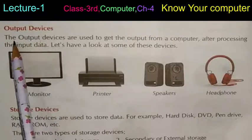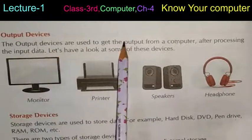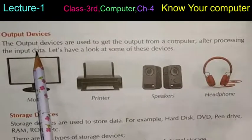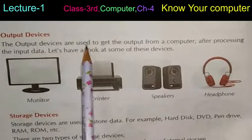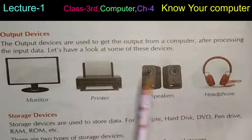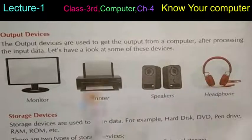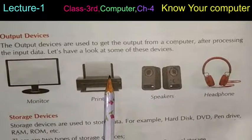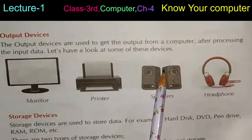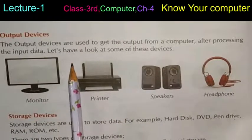Output devices are used to get the output from a computer after processing the input data. Some examples are: monitor, printer, speaker, and headphone. Monitor pe screen pe output dikhai deta hai. Printer se paper bahar aata hai — jo hamari soft copy hoti hai use hard copy mein convert karta hai. Speaker aur headphone se voice bahar aati hai. That's why all these are called output devices.